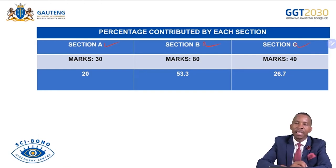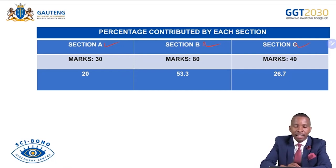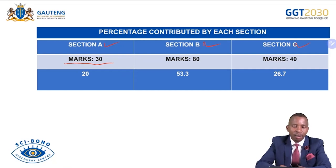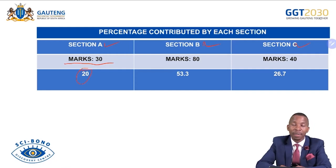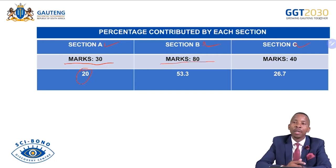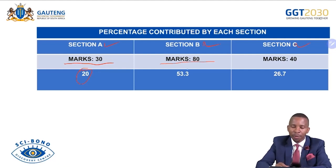Section A consists of 30 marks, contributing 20% of the question paper. Section B is out of 80 marks — you are given Questions 2, 3, and 4 but answer only two — contributing approximately 53.3%. Section C is out of 40 marks with Questions 5 and 6, contributing about 26.7%.